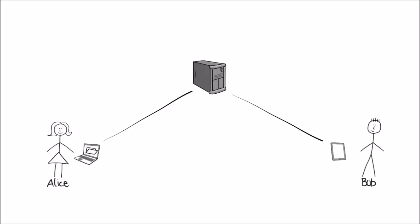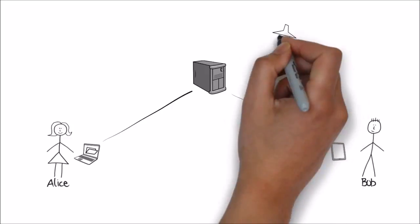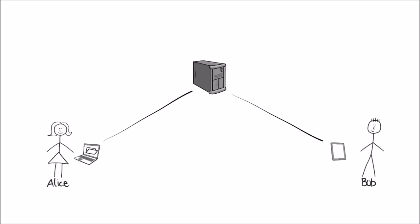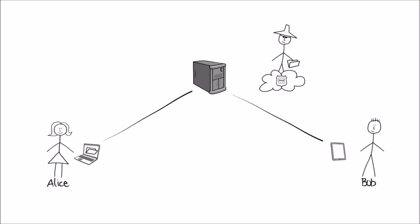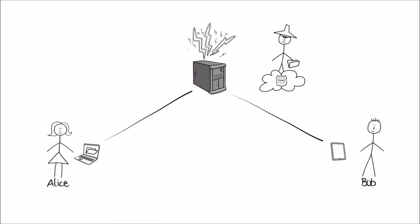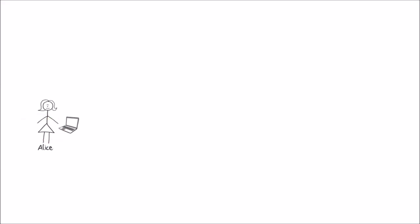Unfortunately, storage providers aren't very secure. For example, governmental authorities or even criminals can easily take a look at Alice's files. And what happens when the storage provider fails? So how can Alice securely share her files with Bob even when one of them is not available?